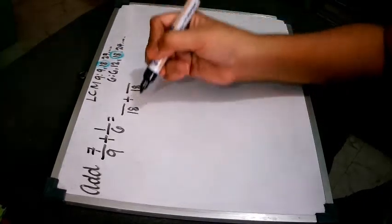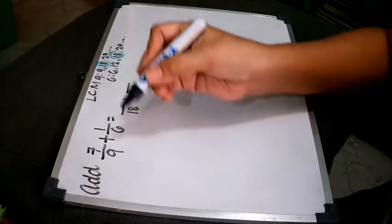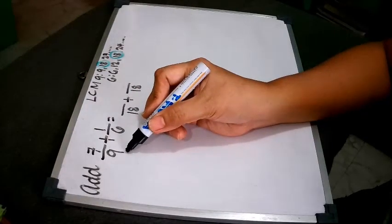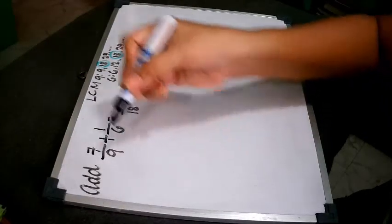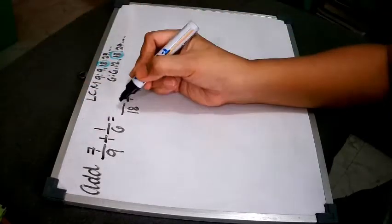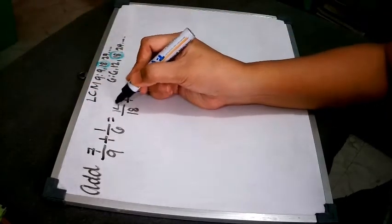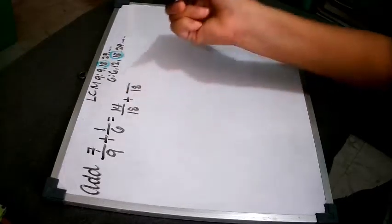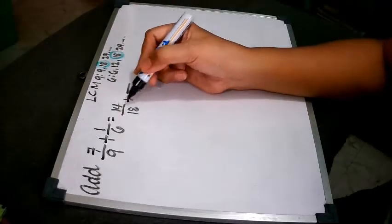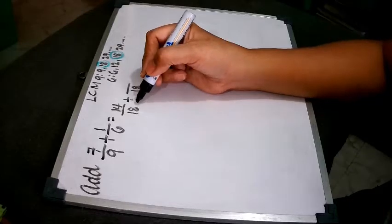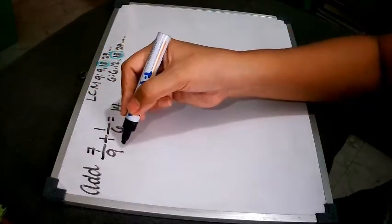18 divided by 9 equals 2. 2 times 7 equals 14. So 14 now is our new numerator. As you can see, 14 over 18 is equivalent to 7/9.